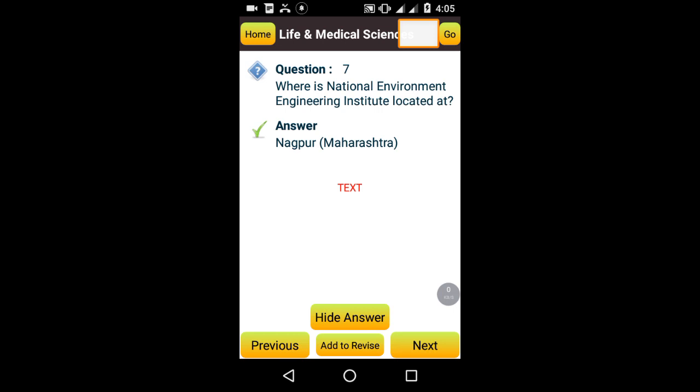Where is National Environment Engineering Institute located? At Nagpur in Maharashtra. Where is Indian Institute of Petroleum located? At Dehradun, UP. Where is National Aeronautical Laboratory located? At Bangalore, Karnataka.